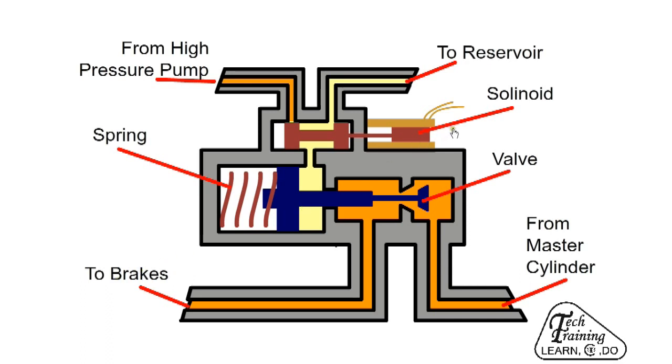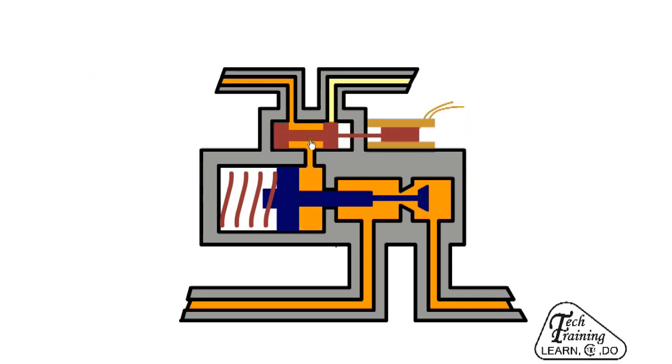When the ECU detects that a wheel is on the verge of locking, it activates the ABS solenoid. The solenoid moves to the left and allows through the high pressure fluid from the pump. The high pressure fluid exerts a force on the piston and closes the valve against the spring pressure.